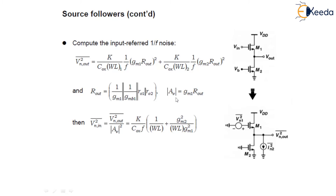The gain is gm1·Rout. Substituting the value of gain and Vn_out into the equation, the input referred flicker noise or 1/f noise equals K / (Cox·WL1) · (1/f) + (gm2²·WL1) / (gm1²·WL2) · (K / Cox).